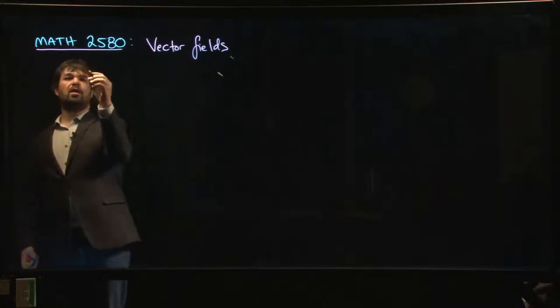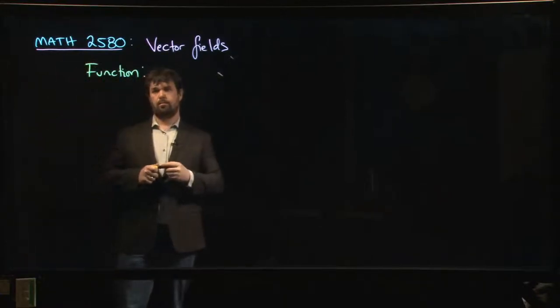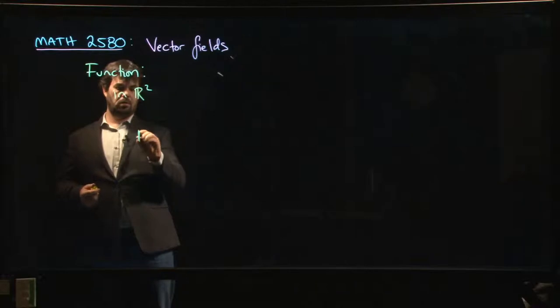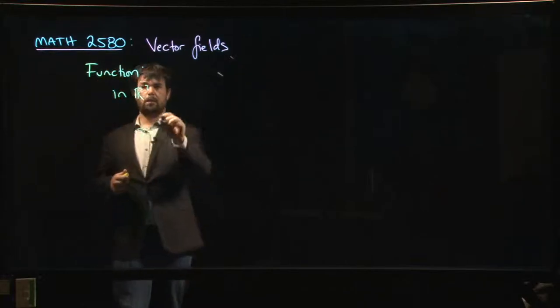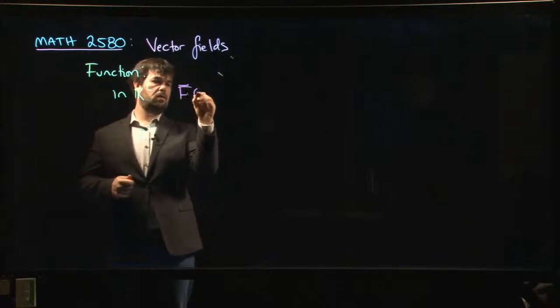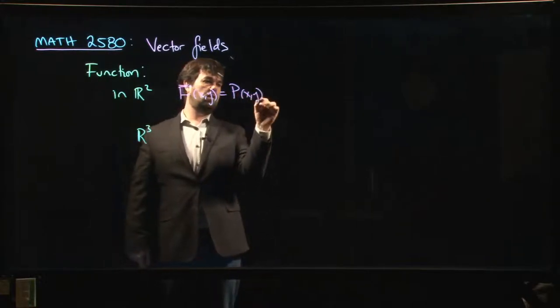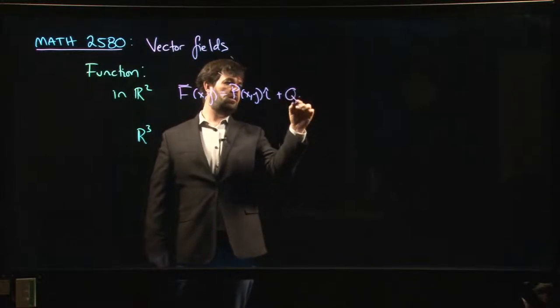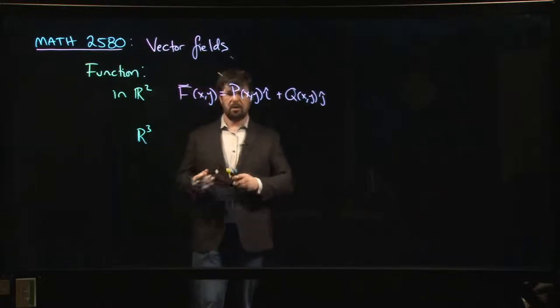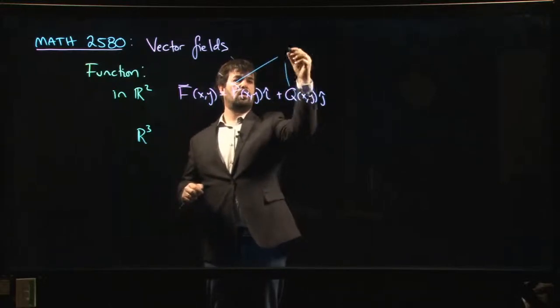The basic idea is that you're thinking of vector fields as a function. We'll distinguish between R² and R³. In R², you're looking at something like F of xy, and you might write this as P of xy times i and Q of xy times j.